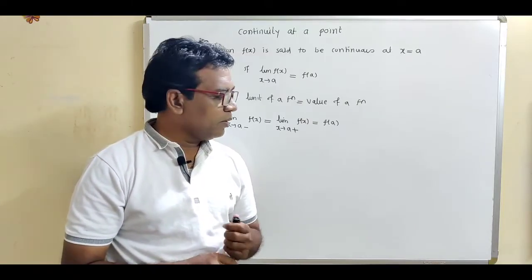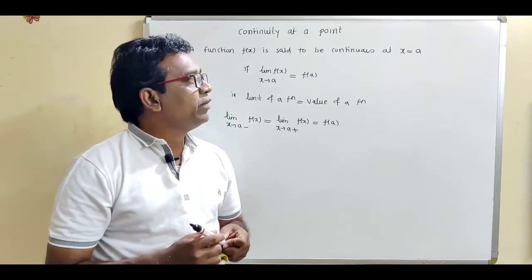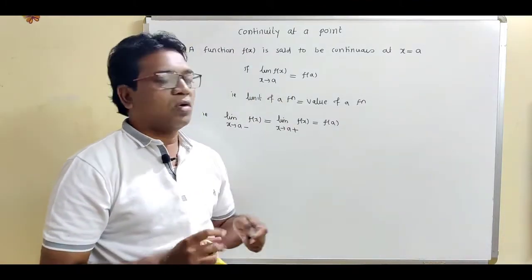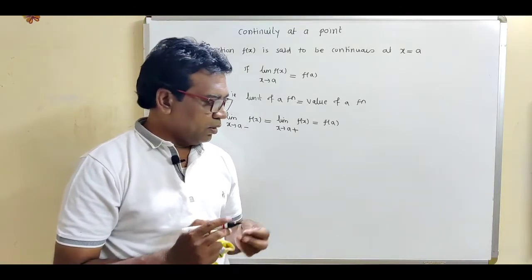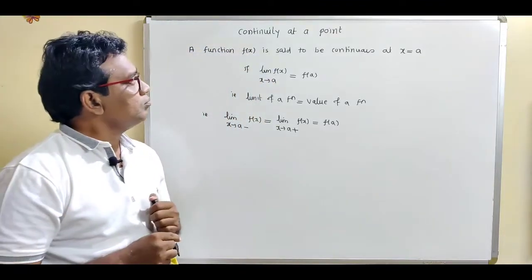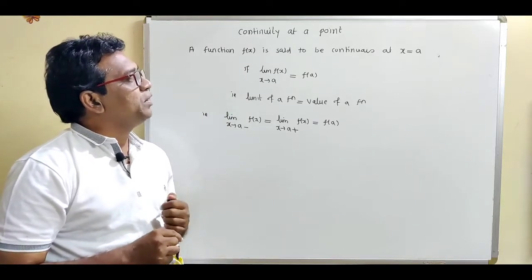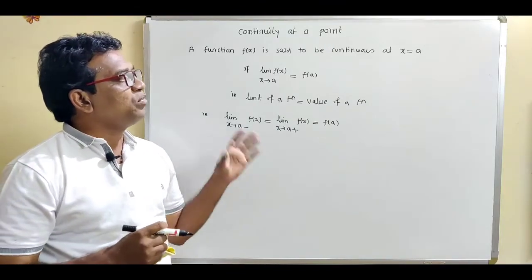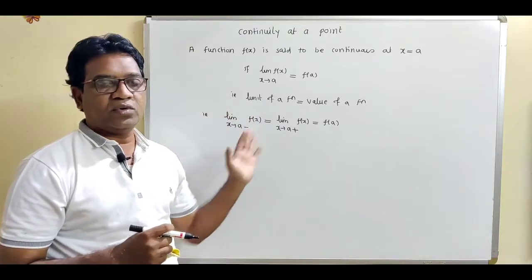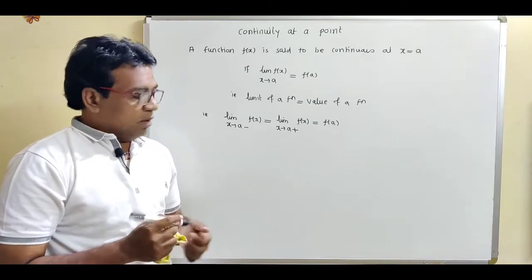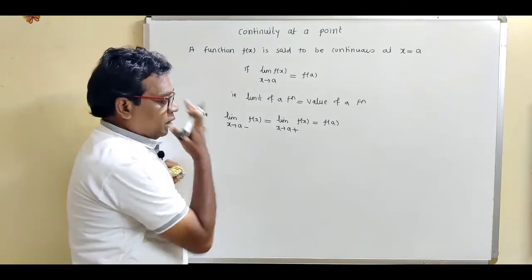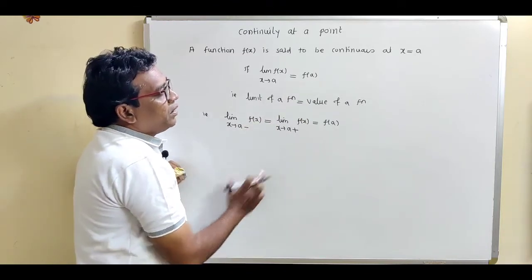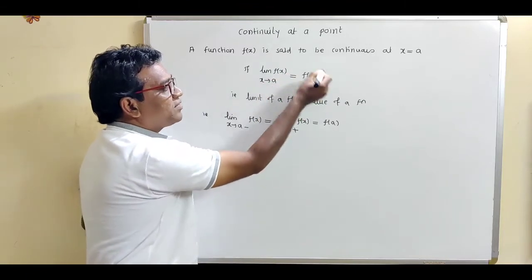Today we are going to discuss the new topic of calculus: the continuity of a function. This is the definition of continuity of a function at a given point. We have to check the continuity at the given point, not the total function. A function f(x) is said to be continuous at x equal to a if the limit of the function is the same as the value of the function.